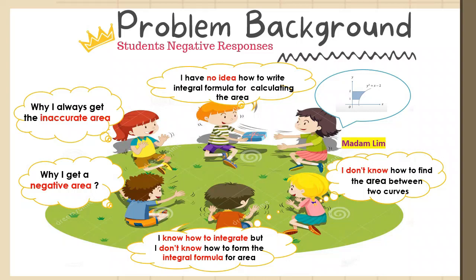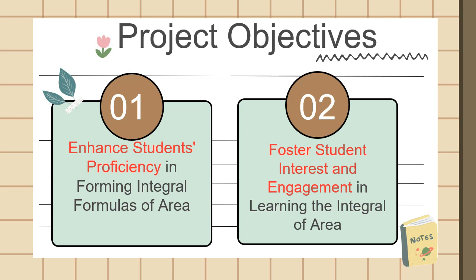The negative responses expressed by the students — such as not knowing how to write the integral formula, lacking knowledge on finding the area between two curves, or consistently obtaining negative area values — highlight further challenges and misconceptions that need to be addressed in their learning process. These responses reflect common difficulties students face when working with integration in forming integral formulas for calculating the area between curves. The primary objective of this project is to improve student skills in forming integral formulas for accurately calculating the area between two curves. The secondary objective is to cultivate students' interest and engagement in learning the integral of area, specifically in the context of calculating the area between two curves.